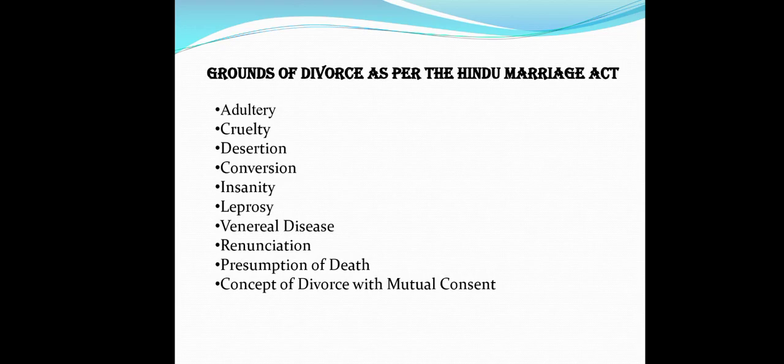The seventh ground is Venereal Disease. Under this concept, if the disease is in a communicable form and can be transmitted to the other spouse, it can be considered a valid ground for divorce. The eighth ground is Renunciation — when one spouse decides to renounce the world and work on the path of God, the other spouse can approach the court and demand divorce. The party who renounces the world is considered as civilly dead; this is a typical Hindu practice and a valid ground for divorce. The ninth ground is Presumption of Death — a person is presumed to have died if family or friends have not heard any news about that person, alive or dead, for seven years. This is considered a valid ground for divorce, but the burden of proof lies on the person who demands it.